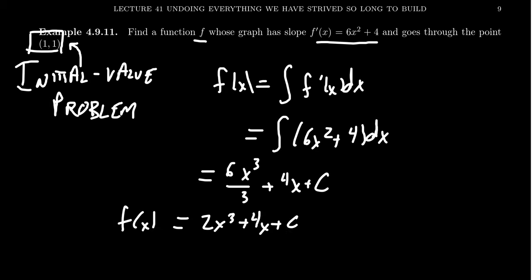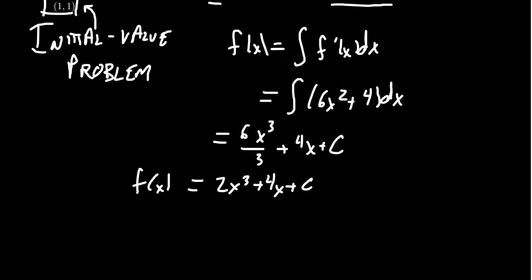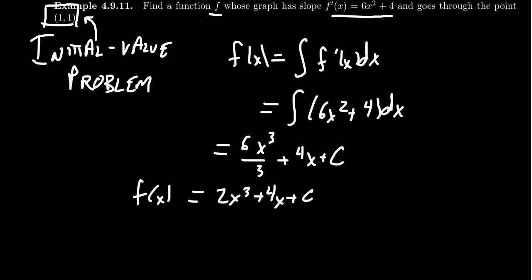If we simplify the fraction, 3 goes into 6 two times, we get 2x³ + 4x + C. This equals f(x), but this is the issue that my family member was having. If I don't know where you're located, then I don't know how to finish this problem. This is where the initial value comes into play. Because this initial value (1,1) is on the graph, that means when x equals 1, the y coordinate will be 1. We have this relationship that f(1) = 1.